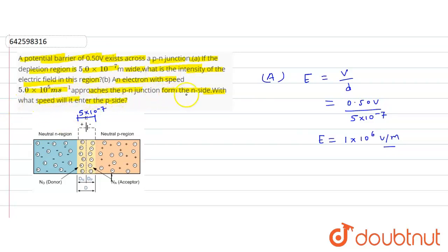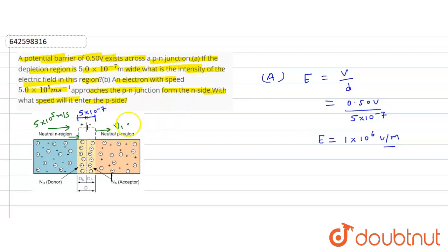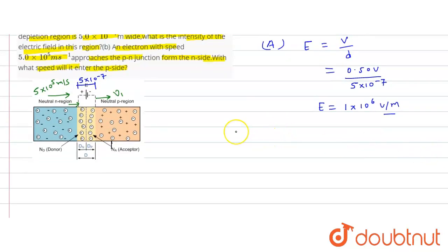In part B, an electron with speed 5×10⁵ meter per second approaches the P-N junction from the N side. When it enters the P region, we need to find its speed — let's call it v1. We apply the conservation of energy principle here.